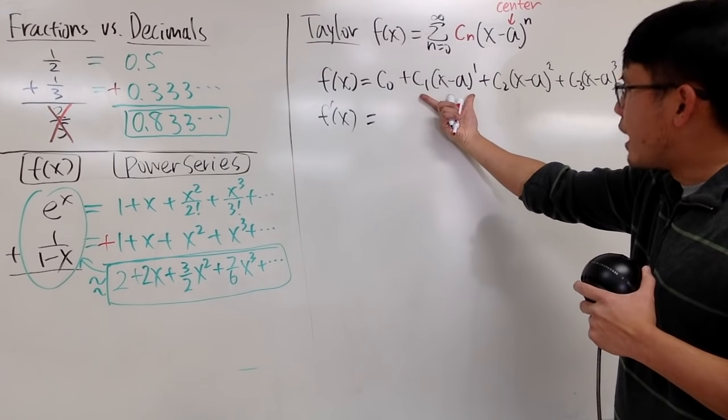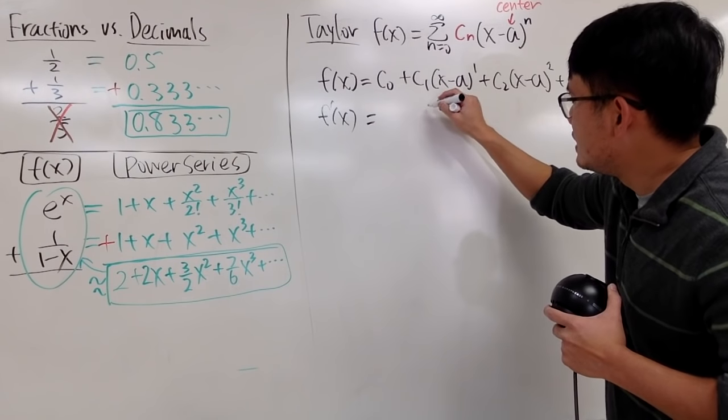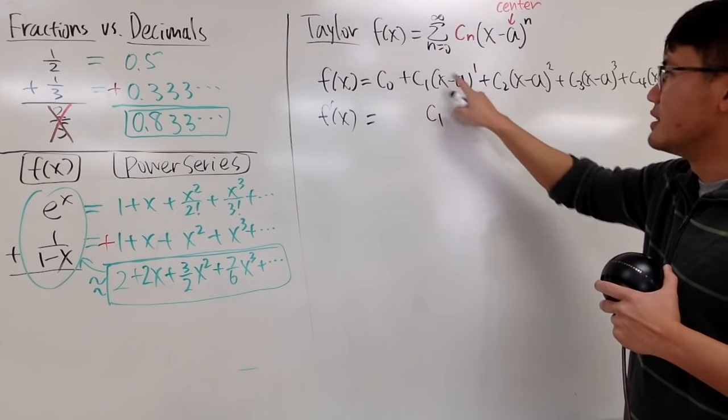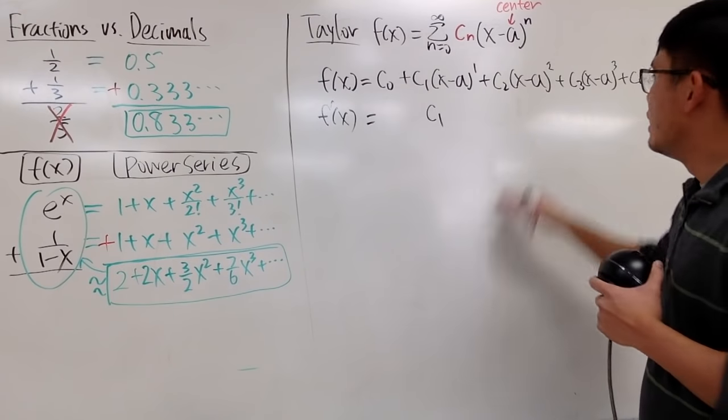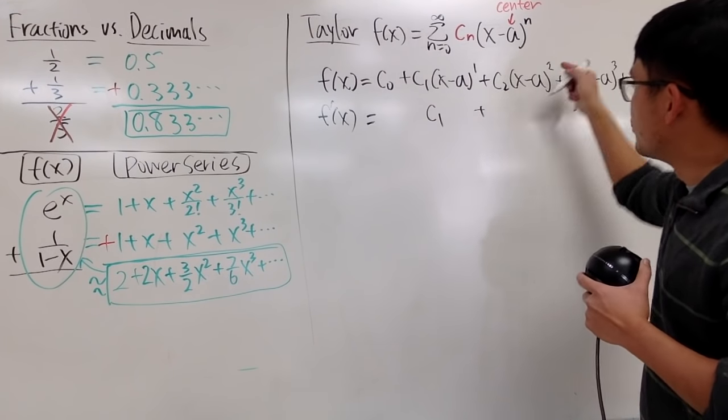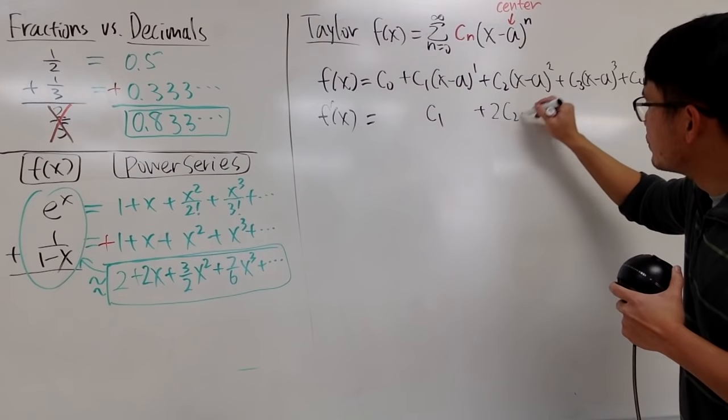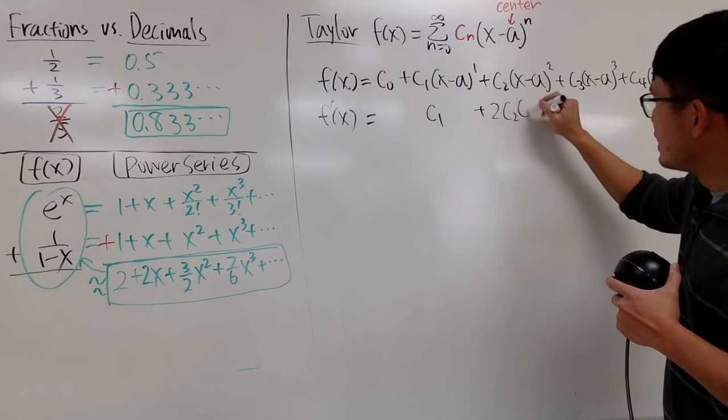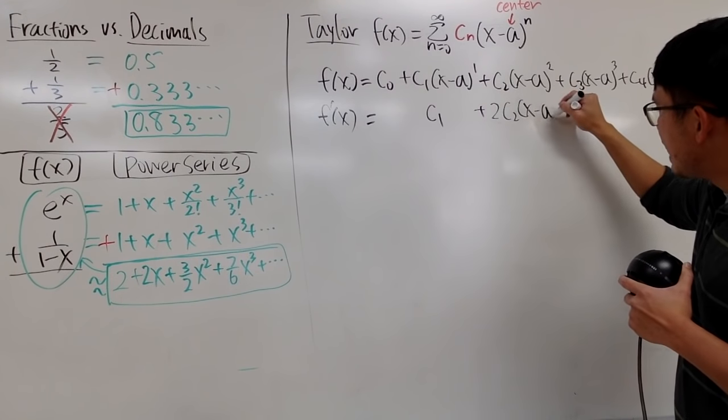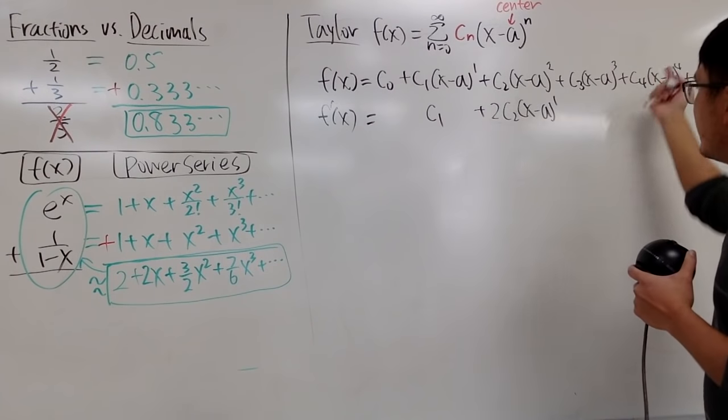And when you differentiate this part, well, you just get the constant c1. The derivative this is just 1, so you just have to see 1. And then when you differentiate this right here, you bring the 2 to the front. Don't forget about that. And then you have c2. And you minus 1, so you get x minus a to the first power.